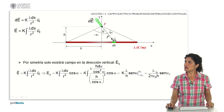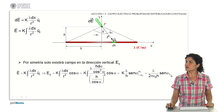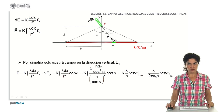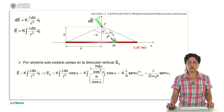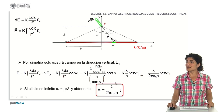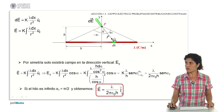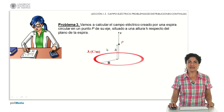The result depends on lambda, divided by 2 pi epsilon_0, the height h of the study point, and multiplied by sine of alpha_1. For an infinite wire, alpha_1 approaches pi/2, and substituting this limit gives a field value of lambda divided by 2 pi epsilon_0 h, directed along the unit vector j at the vertical study point.